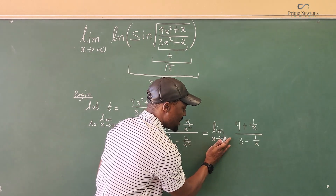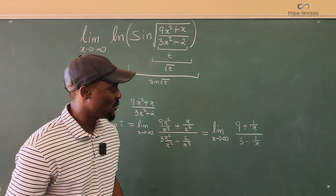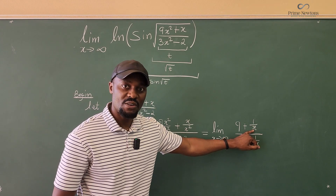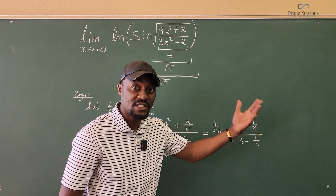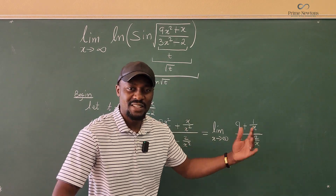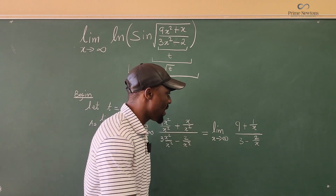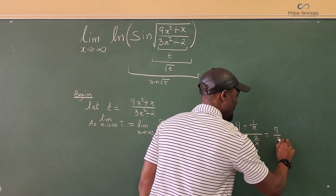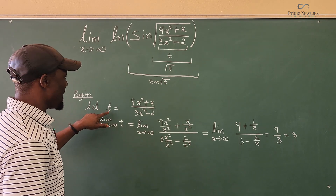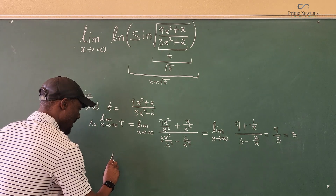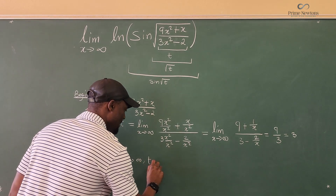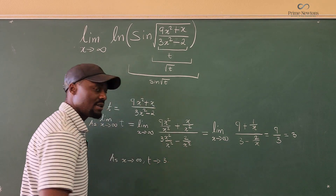As x goes to infinity, 1/x goes to zero and 2/x² also goes to zero, since they are finite over infinity. So you're left with 9/3, which equals 3. Therefore, as x approaches infinity, t approaches 3.